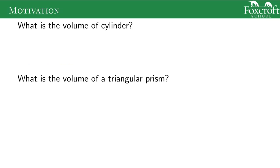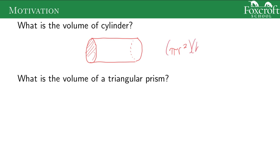What's the volume of a cylinder? A cylinder looks like this — we have a circle on one end, some length to it, and another circle on the other end. The volume is the area of a circle, pi r squared, and then you multiply that by the height or width of the cylinder. So you find the end area and multiply it by the height.